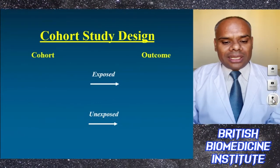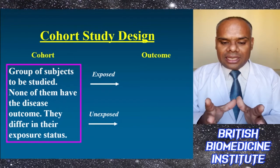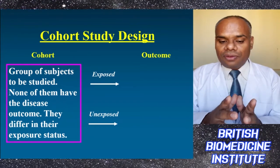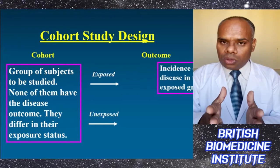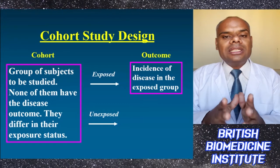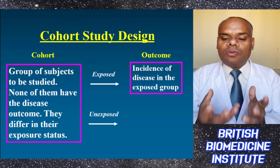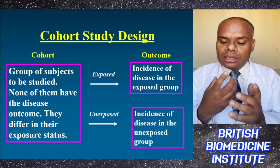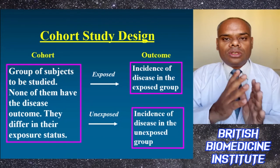A cohort is a group of subjects that will be investigated and studied, none of whom have the disease, and they differ in their exposure status. If exposed, there will be an incidence of disease in the exposed group, whereas among the unexposed, there will be an incidence of disease in the unexposed group.